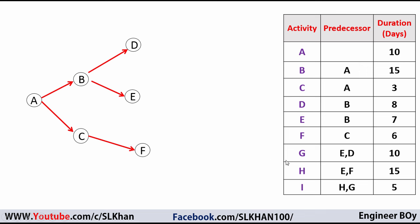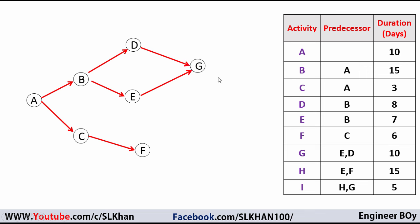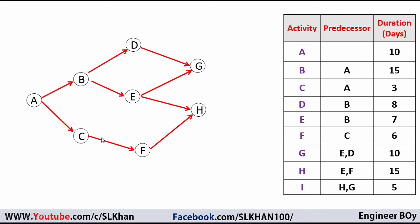Activity G depends on E and D, so Activity G can start once both D and E have been completed. Activity H depends on Activity E and F, so we draw arrows from E and F and join them to the node for H. Finally, Activity I depends on Activity H and G, and this is the end of the diagram.